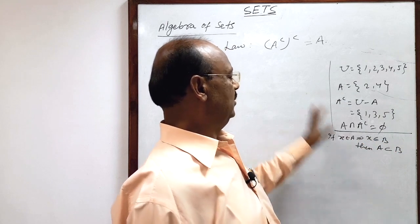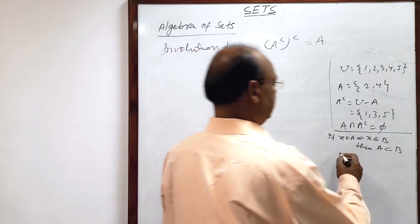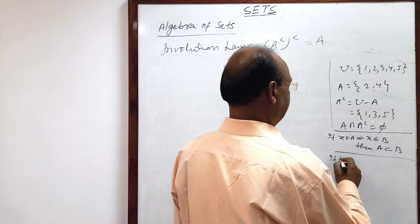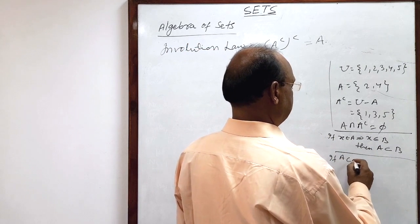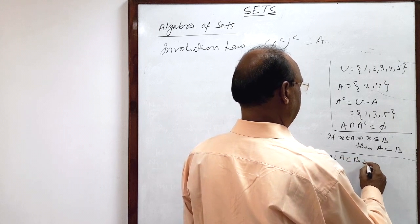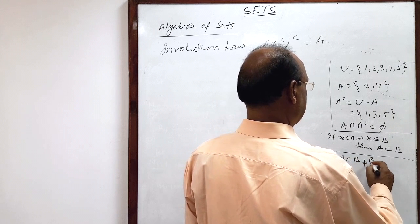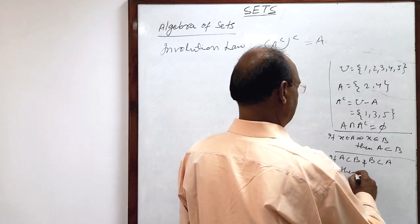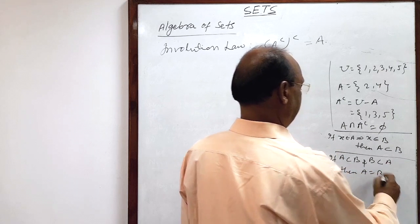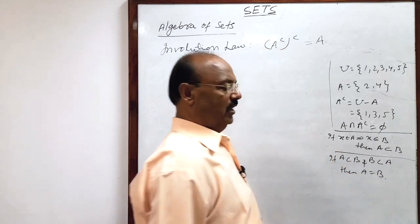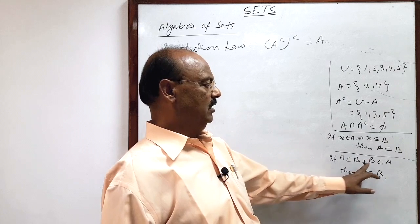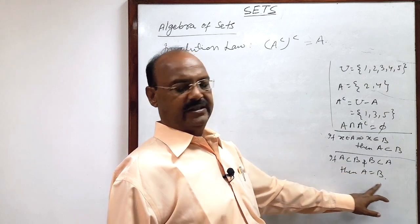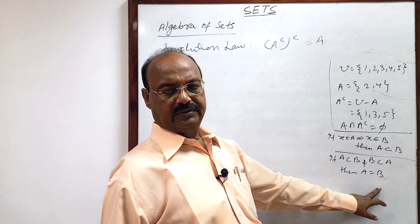Another property we will use is: if A is a subset of B and B is a subset of A, then sets A and B are equal. If A is a subset of B and B is a subset of A, then A equals B.